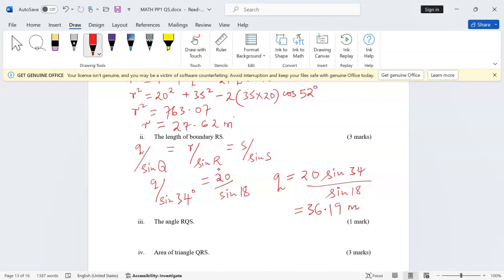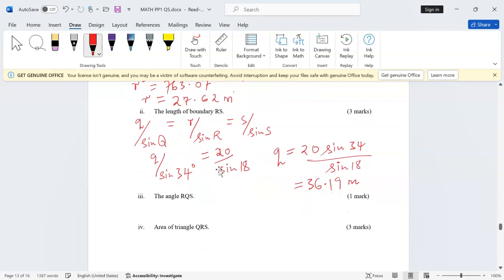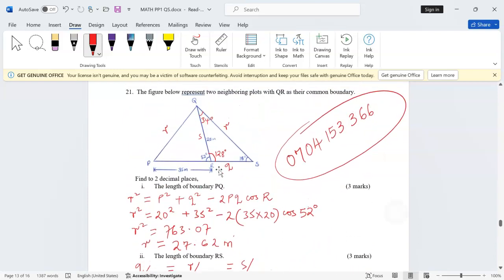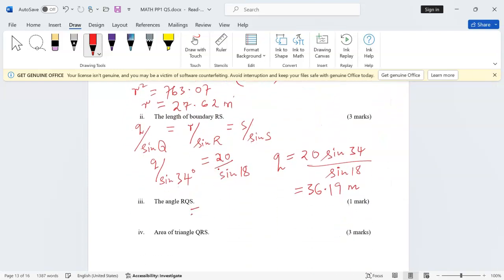Then we are also talking about angle RQS. RQS we have already determined as 34 degrees. Remember we are finding to two decimal places, so we have to be very careful with the instructions.